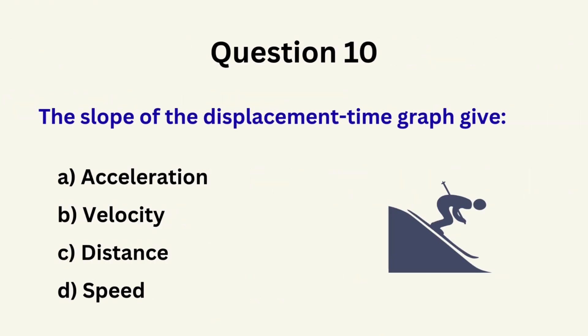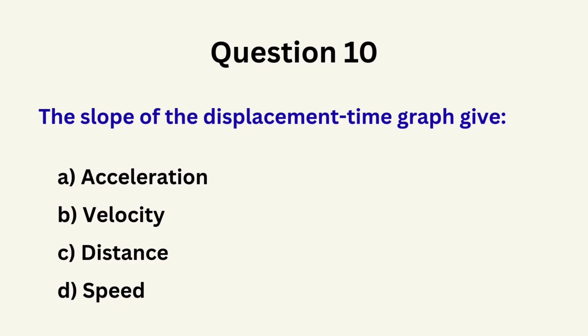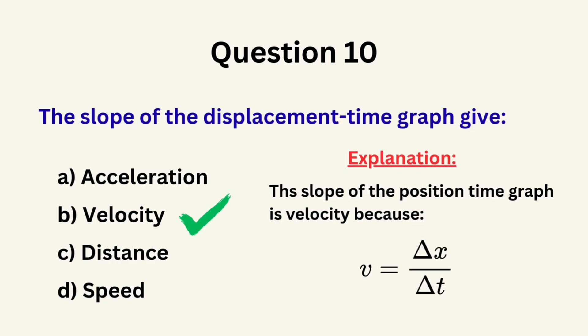Question 10: The slope of the displacement-time graph gives... A. Acceleration, B. Velocity, C. Distance, D. Speed. The correct answer is B: velocity.